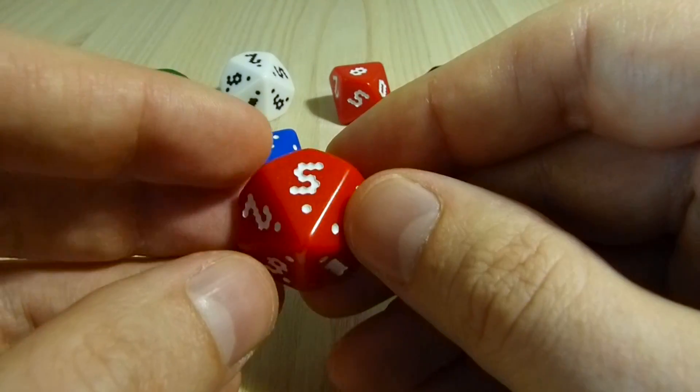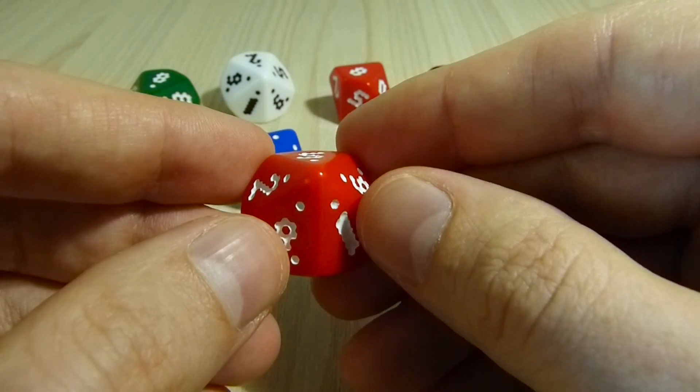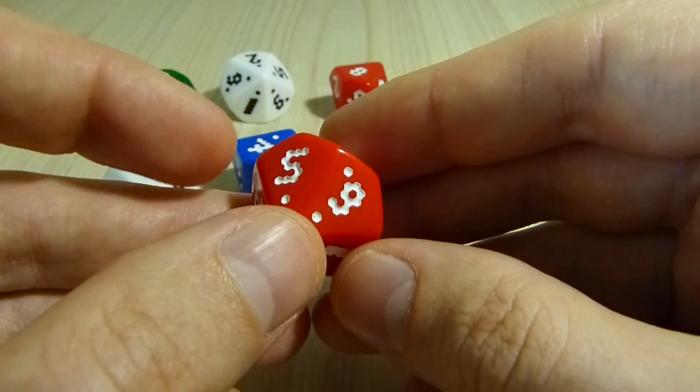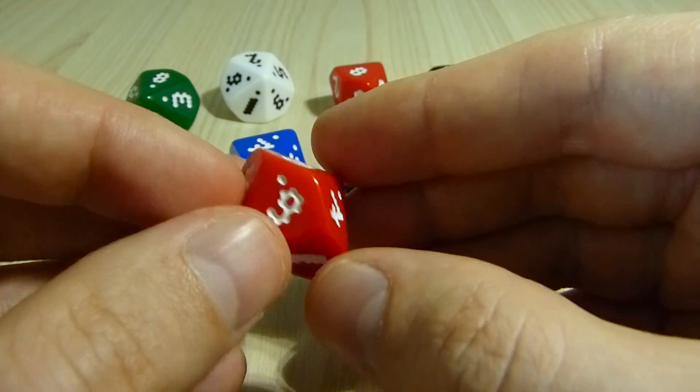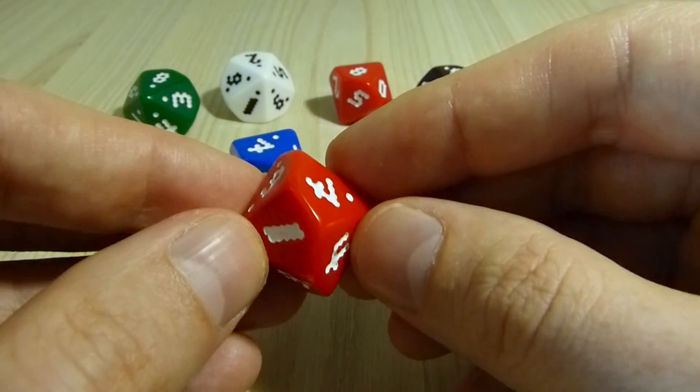We've also tried to balance the numbers as best as possible. Opposite faces on the die add up to 9, or 90 in the case of the tens die.